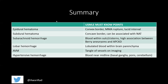In summary, for epidural hematoma: convex border, lucid interval clinically, associated with middle meningeal artery rupture. Subdural hematoma has a concave border and can be associated with non-accidental trauma or child abuse. Subarachnoid hemorrhage is blood within the sulci or cisterns, with high association of berry aneurysms with autosomal dominant polycystic kidney disease. Lobar hemorrhage is lobulated, well-defined blood within a specific lobe of the brain parenchyma. AVMs are tangles of blood vessels on imaging. Hypertensive bleeds occur near the midline — basal ganglia, pons, and cerebellum.